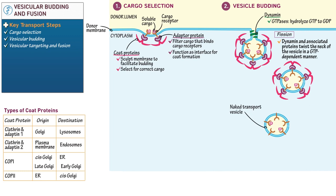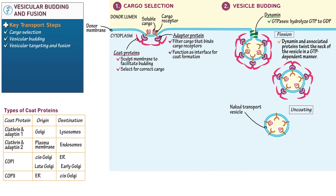Label this step uncoating, during which the adapter and coat proteins that dissociate get recycled via the retrieval pathway and returned to the donor compartment. This brings us to our final phase: vesicular targeting and fusion, wherein the vesicle targets a membrane and fuses with it.